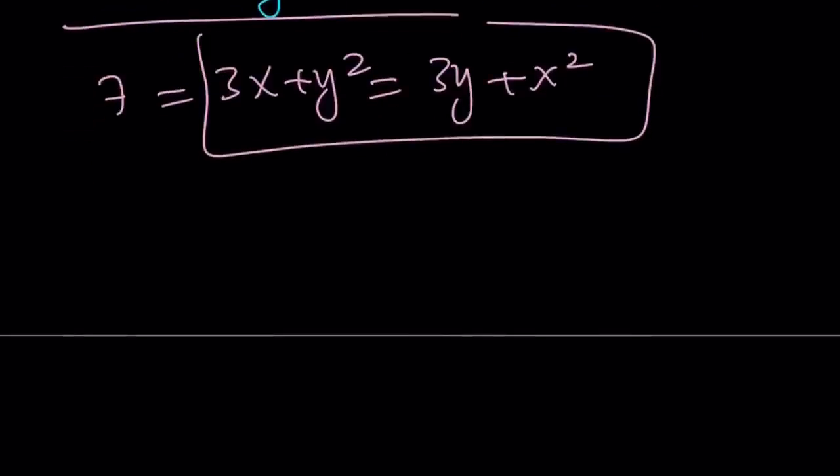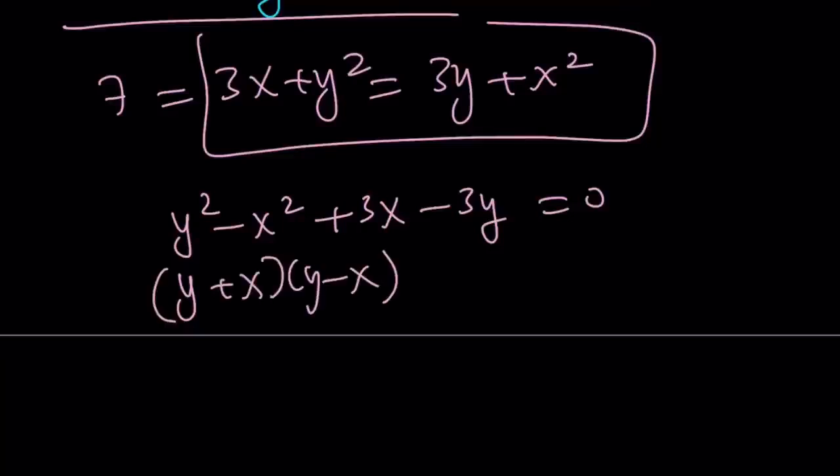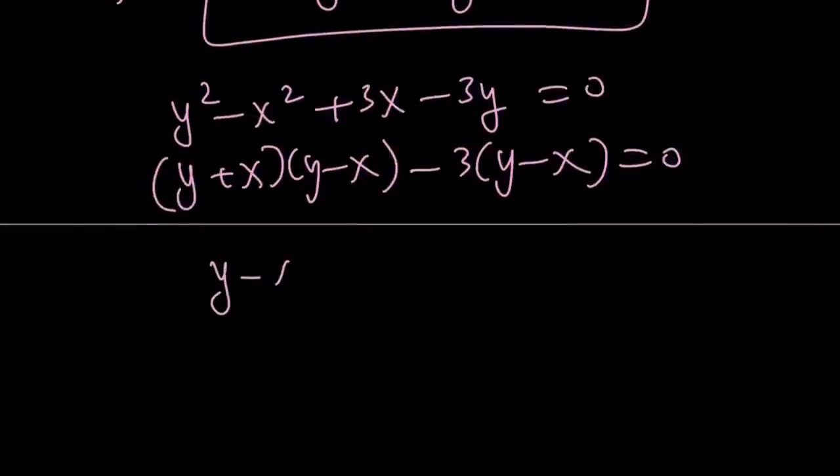Left hand side is okay. y squared minus x squared plus 3x minus 3y is equal to 0. This is y plus x times y minus x. This is negative 3 times y minus x. Yay, I got a common factor. Of course you should. y minus x if you do it correctly. Then, you get y plus x minus 3. Going too fast. Let's slow down.